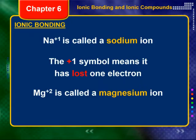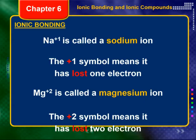Let's look at how we name these things. Sodium plus one — we call it the sodium ion. It doesn't matter if you write plus one or one plus. Na⁺¹ or Na¹⁺ doesn't matter — we call that the sodium ion. The plus one means that it's lost one electron. Mg²⁺ is still called the magnesium ion. The plus two means that it's lost two electrons.